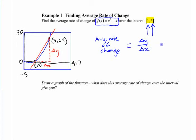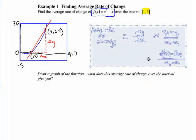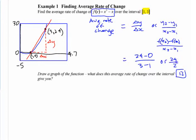Change in y over change in x — or y₂ minus y₁ over x₂ minus x₁. Or you could say, if it's f(x), f(x₂) minus f(x₁) over x₂ minus x₁. Don't get mixed up because of the notation — it's just the difference in the y values divided by difference in the x values. So putting the numbers in: 24 minus 0 over 3 minus 1, which is 24 over 2, equals 12. For every 1 across, it moves up 12. If the vertical axis were distance and the horizontal were time in seconds, this would be meters per second.